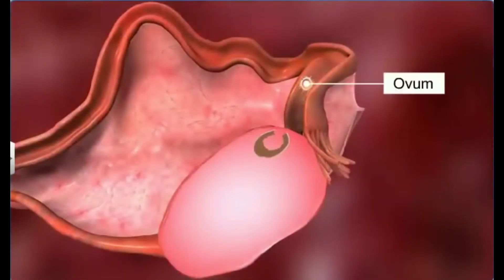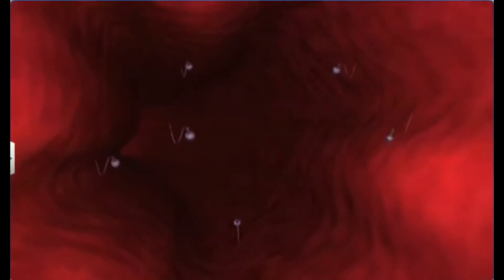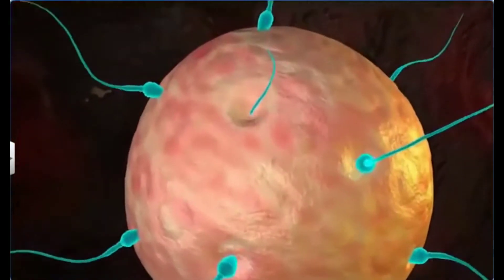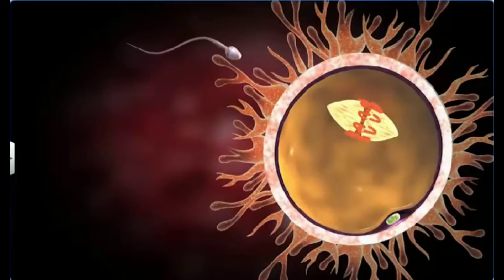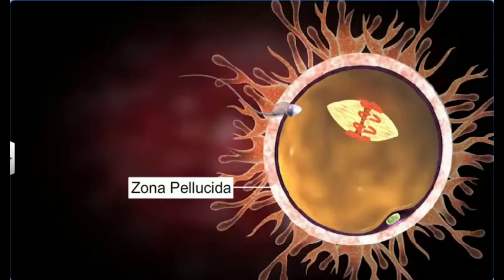The ovum present in the fallopian tube starts drifting towards the uterus. Once it reaches the ampullary-isthmic junction, it gets bombarded by several thousand sperms. However, only one sperm penetrates the zona pellucida and initiates the fertilization process. This penetrating sperm causes the zona pellucida to stiffen, which prevents other sperms from entering the ovum.